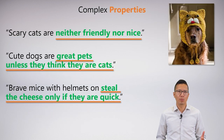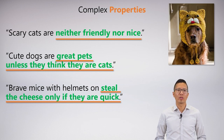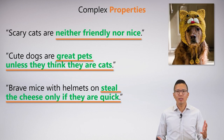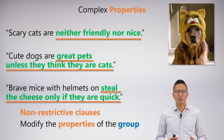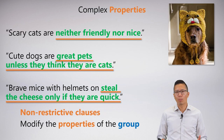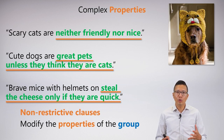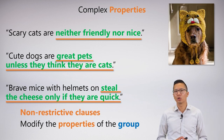For complex properties, it's the same story. You can say anything you want about a subject — it's not always something straightforward like 'is scary' or 'is evil.' You can say they're neither friendly nor nice, or they make great pets unless they think they are cats, or steal the cheese only if they are quick. We can also have complicated properties in non-restrictive clauses where we add extra properties to our subject. Anything that modifies the property for a universal comes in the consequent, and for an existential it goes after the main connective of the conjunction.